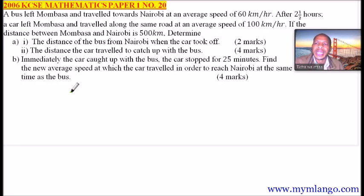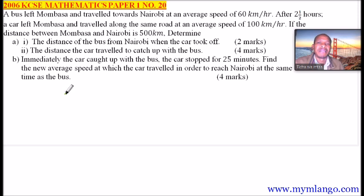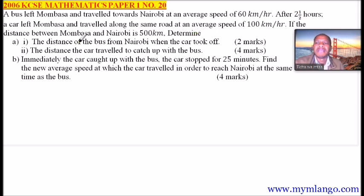This is question number 20, 2006 KCSE Mathematics Paper 1. We are told a bus left Mombasa and travelled towards Nairobi at an average speed of 60 km per hour. After two and a half hours, a car left Mombasa and travelled along the same road at an average speed of 100 km per hour. If the distance between Mombasa and Nairobi is 500 km, determine — Roman number 1: